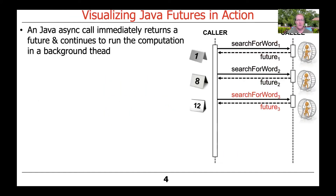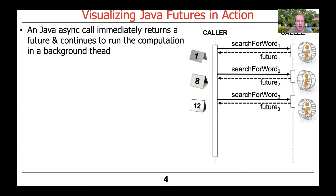So if you recall, a Java async invocation will return immediately with a future. And then the actual call will continue to run the given computation in a background thread. That's what we talked about before.